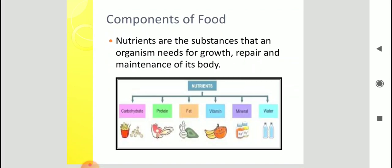Now children, moving on to components of food. This chapter is on nutrition. So we should know that what are the different components of food that we need to eat to lead a healthy life. So what are nutrients? Nutrients are those substances that an organism needs for normal growth, repair and maintenance. So there are all these components together. They are the nutrients.